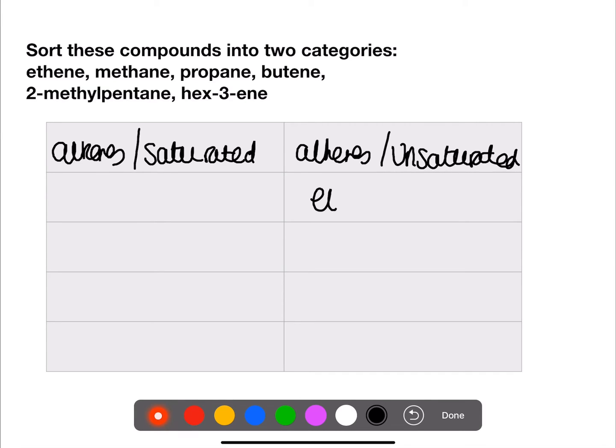Ethene would fall into the alkene or unsaturated column. Methane into the alkane or saturated column. Propane is an alkane.